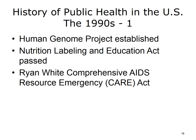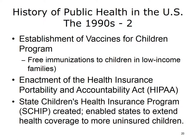The 1990s was typified by numerous public health events. The Human Genome Project was established to study human DNA. Support for AIDS patients came from the Ryan White Comprehensive AIDS Resource Emergency, or CARE Act. Free immunizations to low-income children came via the Vaccines for Children program. Insurance was affected by the Health Insurance Portability and Accountability Act, or HIPAA, which established far-reaching privacy controls.